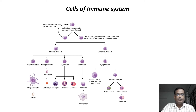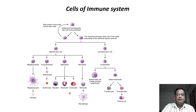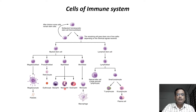The myeloid stem cell in turn produces platelets, erythrocytes, red blood corpuscles, basophils, neutrophils, eosinophils, and macrophages. So the myeloid stem cell is responsible for the formation of these cells associated with the immune system.